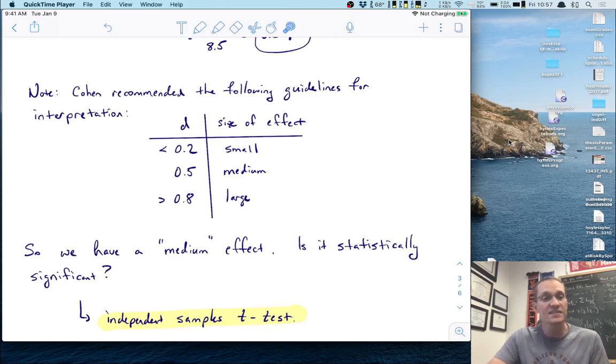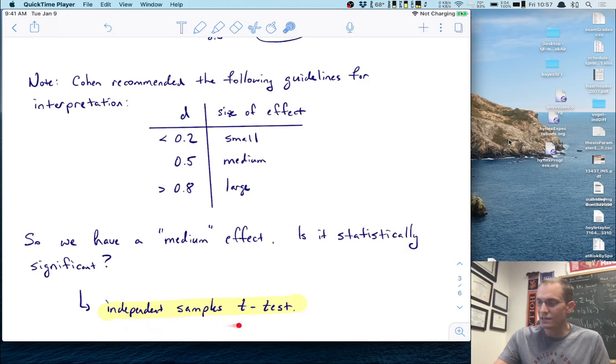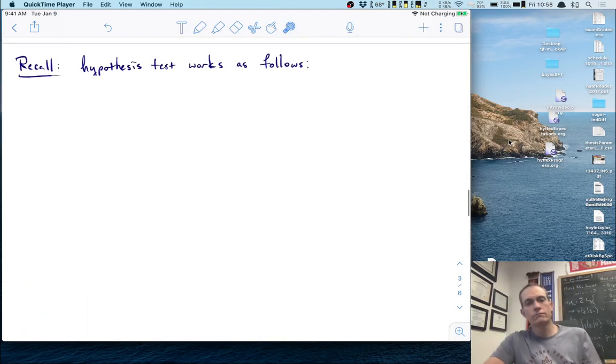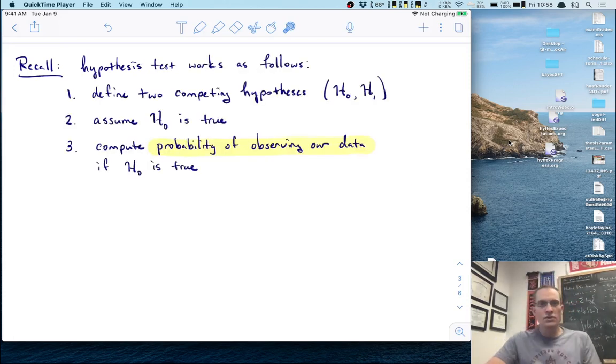We have a medium effect - the next question is, is it statistically significant? To answer that we have to develop a new kind of test: the independent samples t-test. We're going to use what we've done in the past to make extensions that work for two independent groups.